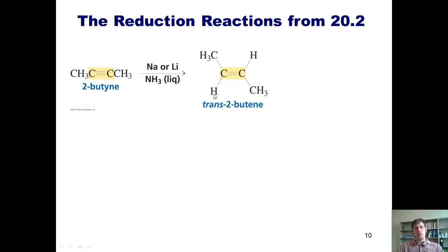but do so in a way that gives me the trans, or E-alkene. This is contrasted with the reduction that I get of an alkyne using Lindlar catalyst, which gives me the cis, or Z-alkene.